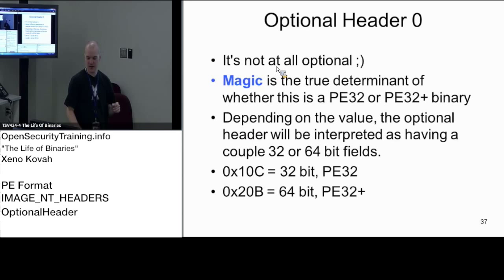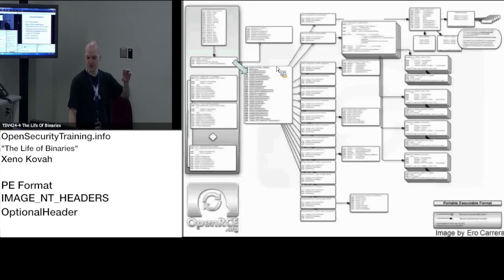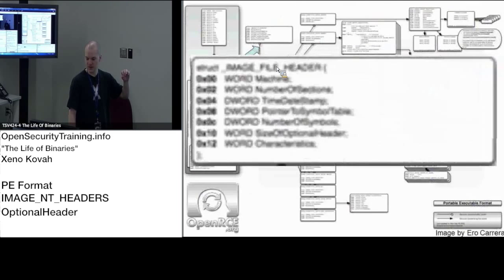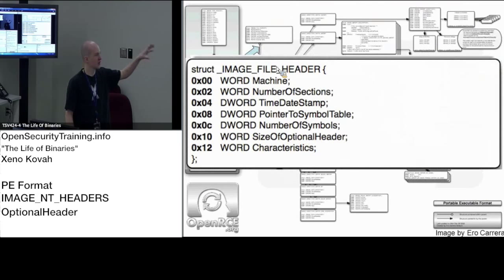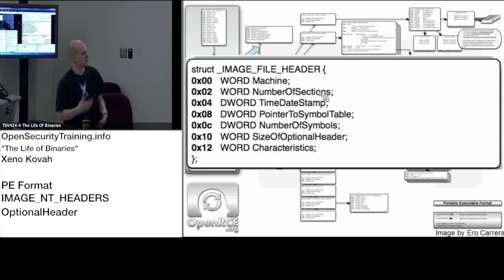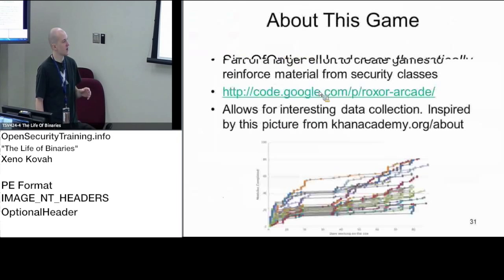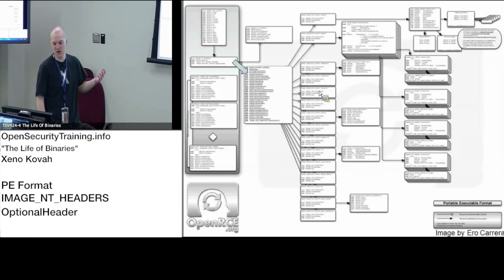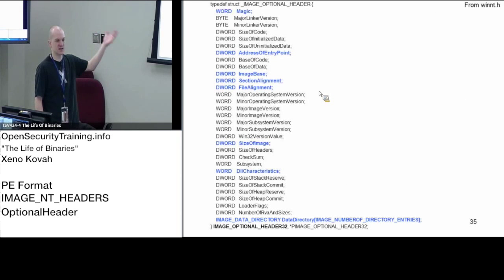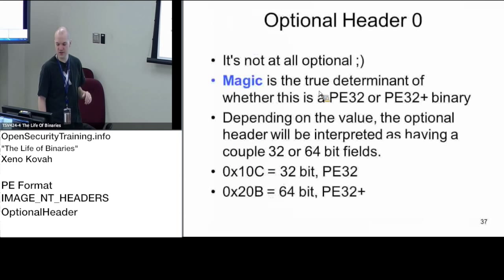It was 'optional' in the context of the COFF format. The file header and DOS header are more of a COFF sort of thing — generic and reusable. The machine field for different CPUs, number of sections, timestamp — all generic. When we get into the optional header, that's where Windows embeds all of its Windows-specific, PE-specific things. Other formats could extend COFF using other optional headers, but we're just talking about how PE does it.